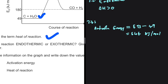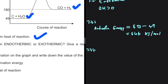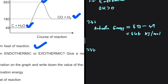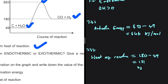The last question, 7.3.2, asks for the heat of reaction. The heat of reaction is the energy of the products minus the energy of the reactants. In this case, that is 180 minus 49, which gives us 131 kilojoules per mole.